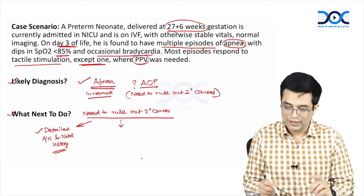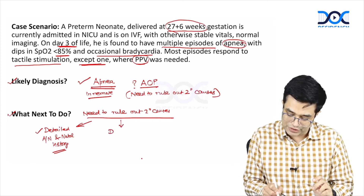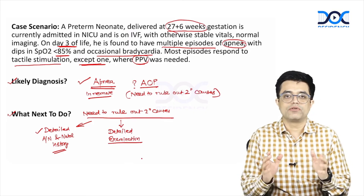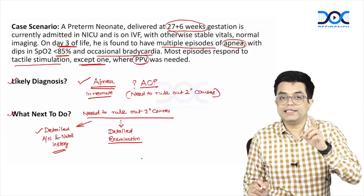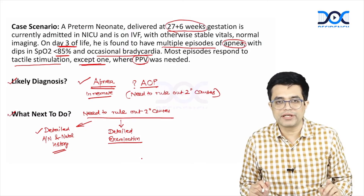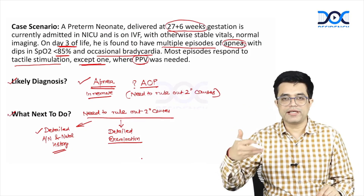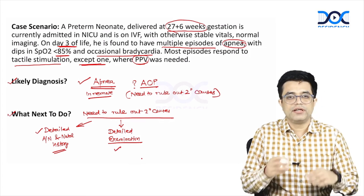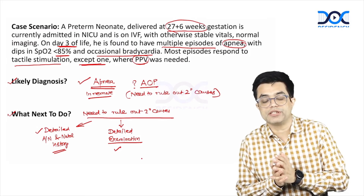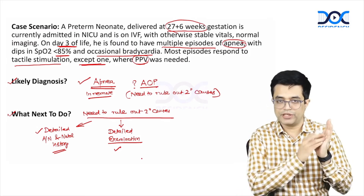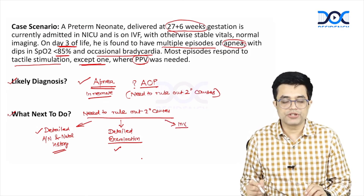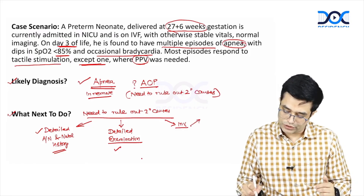Second, you will perform a detailed examination in the child. In detailed examination, you will look at all the vitals, all the reflexes, and also look for any bulging fontanel. Why? Because if there is an intracranial hemorrhage happening with raised intracranial pressure, you may find bulging of the fontanels. Detailed physical examination includes both general and systemic assessment. You also need to watch for any fluid intolerance developing in the child. Thirdly, you will perform investigations. To rule out secondary causes, you need to check the blood glucose.